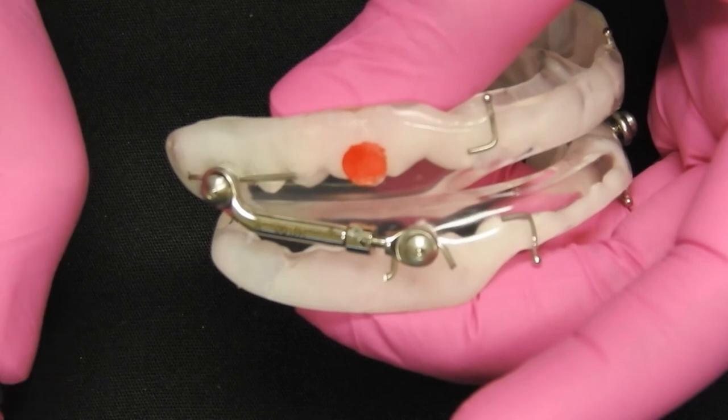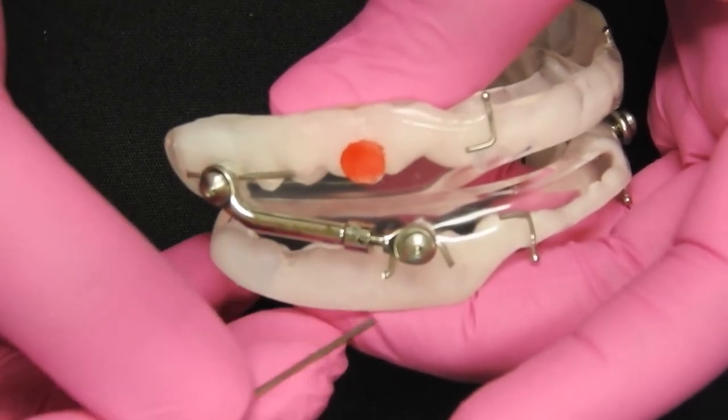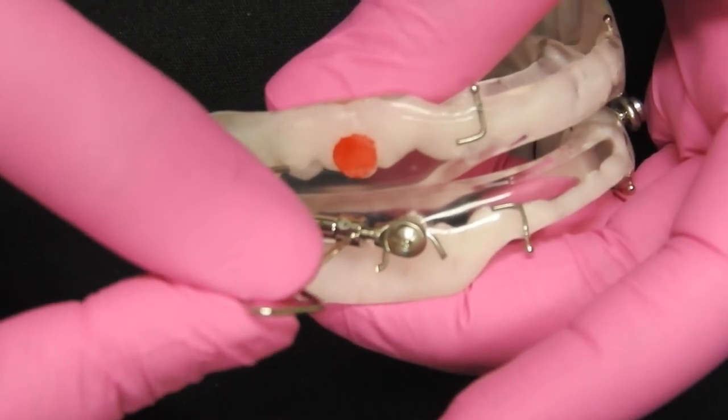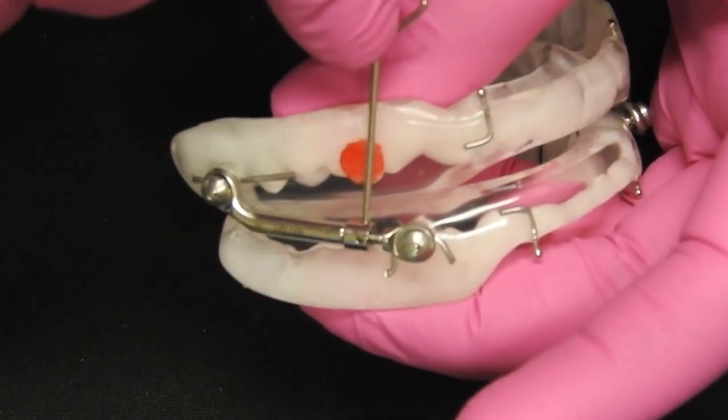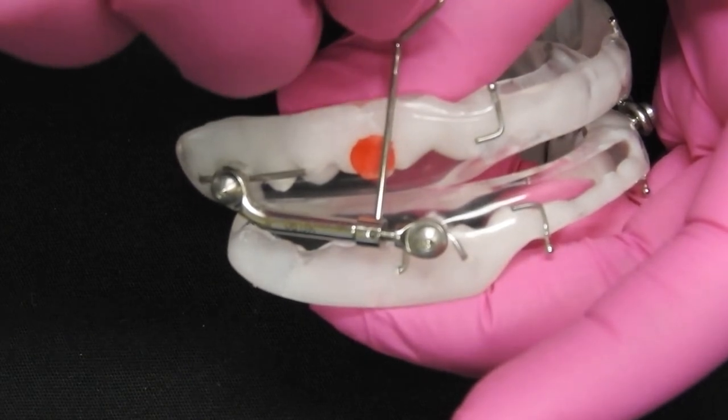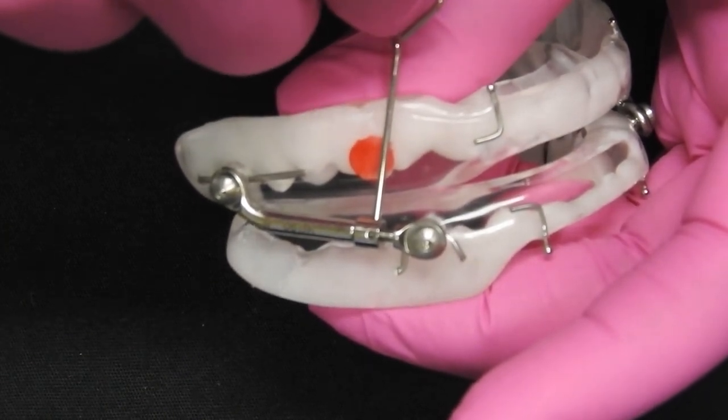Then take the key and insert it again into the middle titration hole for two turns. You will do the turns according to the schedule the doctor has given you.